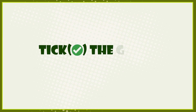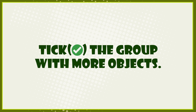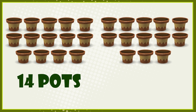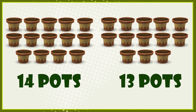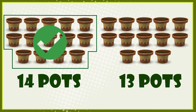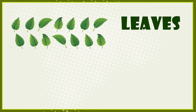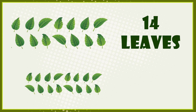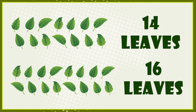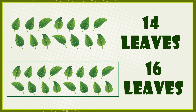Tick the group with more objects. First group has 14 pots. So 14 is greater than 13. First group has 14 leaves. So 16 is greater than 14.